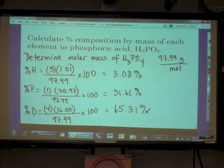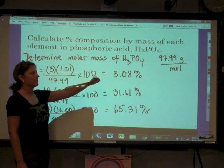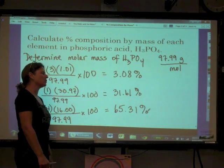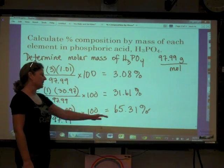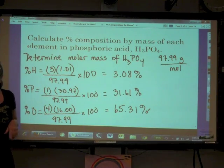This is always going to be the same for phosphoric acid. Always going to be the same. That 3.08% of its mass is coming from the hydrogen, 31.61% of its mass and 65.31% of its mass coming from oxygen.